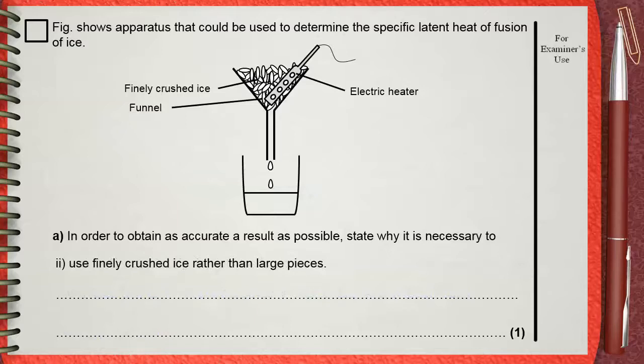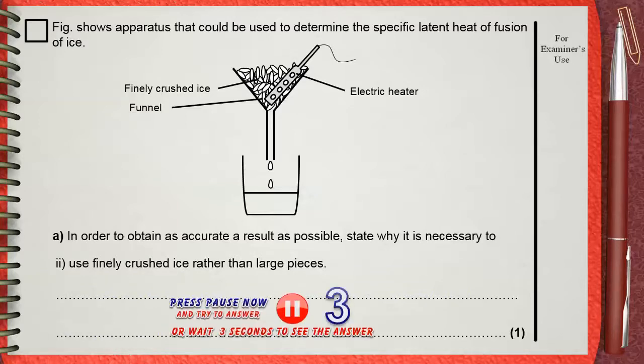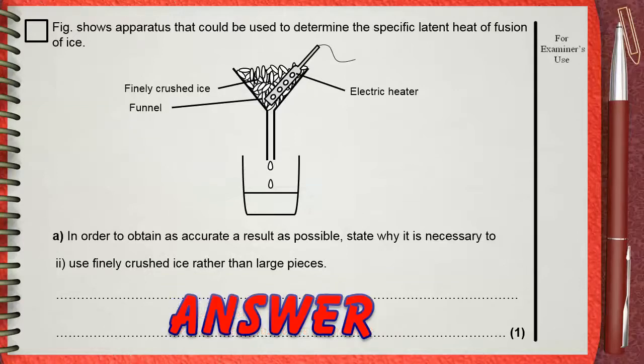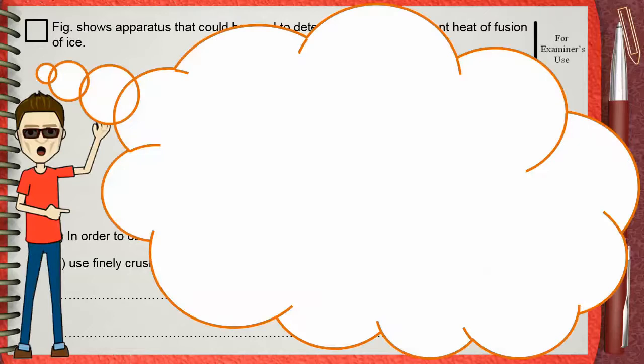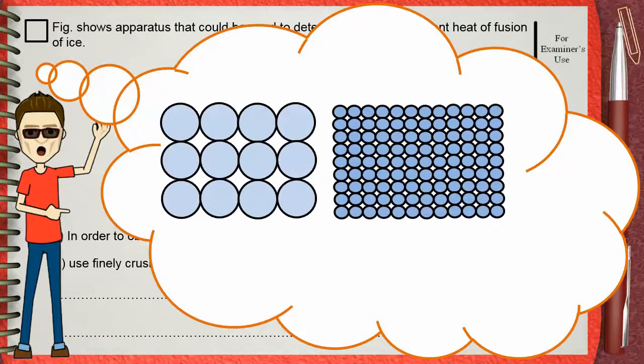Why we use finely crushed ice rather than large pieces? These are large pieces of ice and these are small pieces of ice. The red color shows the air gaps between them. It's clear that the air gaps between larger pieces are much bigger than smaller pieces.